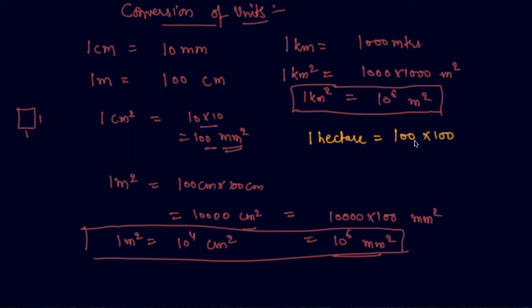1 hectare will be given when you're solving a question about a square field with sides of 100 and 100 meters. This directly equals 100 times 100 meters squared, which is 10 to the power 4 meters squared.